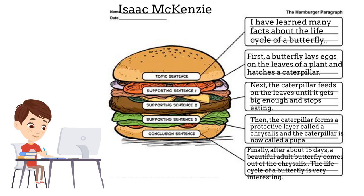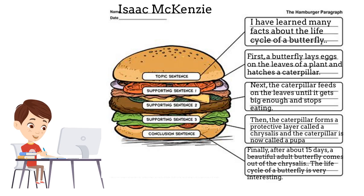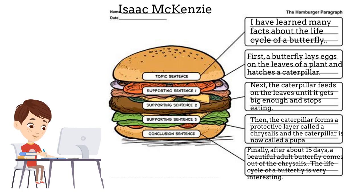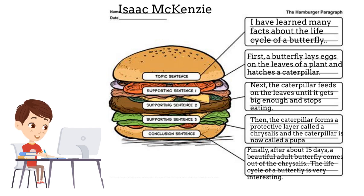First, a butterfly lays eggs on the leaves of a plant and hatches a caterpillar. Next, the caterpillar feeds on the leaves until it gets big enough and stops eating. Then, the caterpillar forms a protective layer called the chrysalis and the caterpillar is now called the pupa. Finally, after about 15 days, a beautiful adult butterfly comes out of the chrysalis. The life cycle of a butterfly is very interesting.